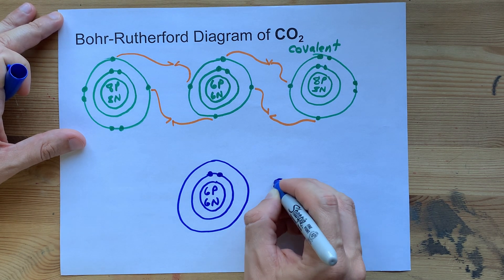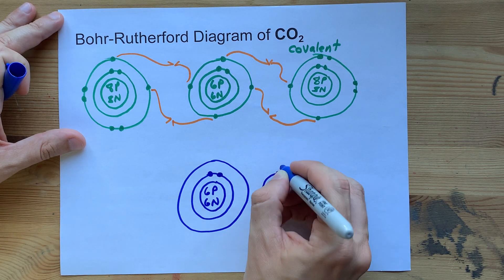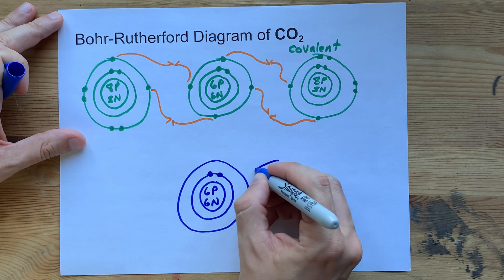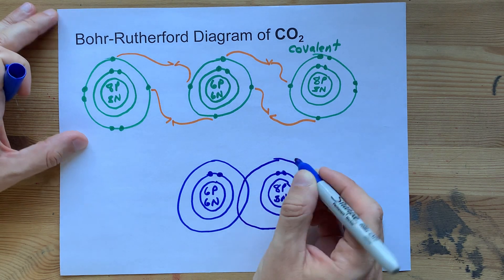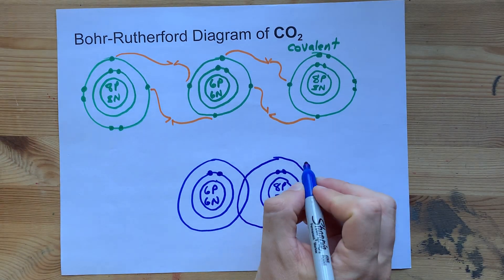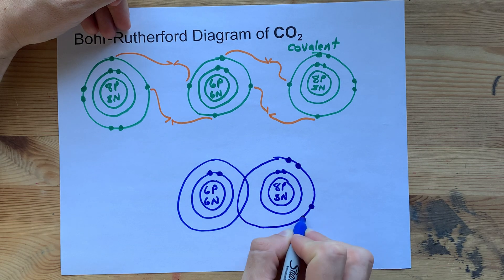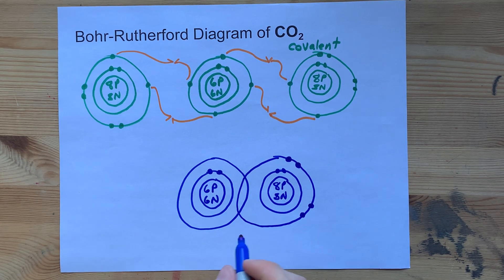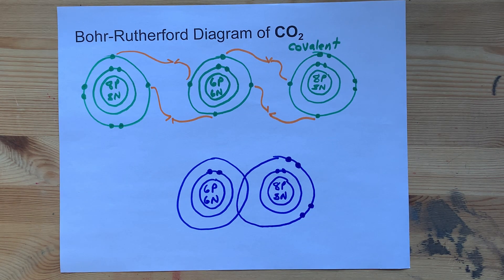So I'm actually going to draw my oxygen super close: 8P, 8N, first shell with two electrons like before. Now I want to make sure that second shell overlaps with the carbon because they are now bonded together by these electrons. We have four unpaired electrons to worry about here, and now we need to show that there are four shared electrons along this bond.